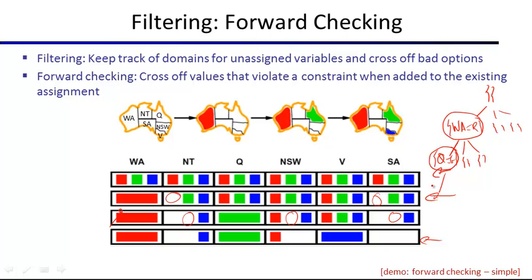This technique is called forward checking. Whenever you instantiate a variable, you prune the domains of all other variables participating in constraints with that variable. It's a quick way to detect failures early, and though more complicated inferences are possible, forward checking may actually be preferred precisely because it is fast.